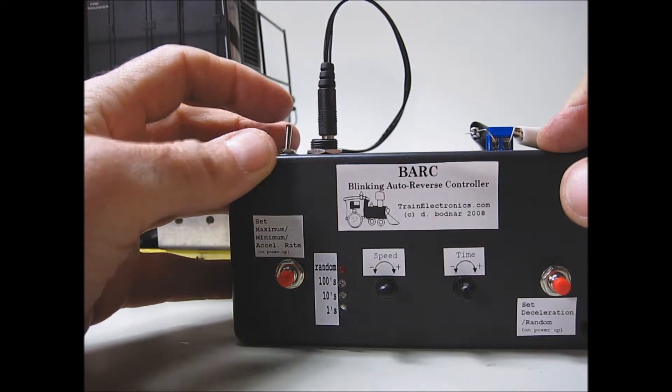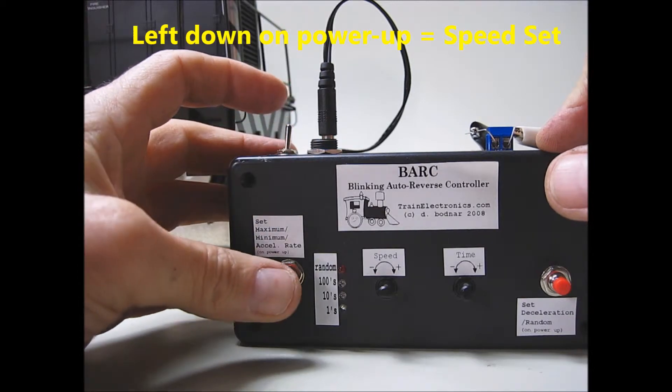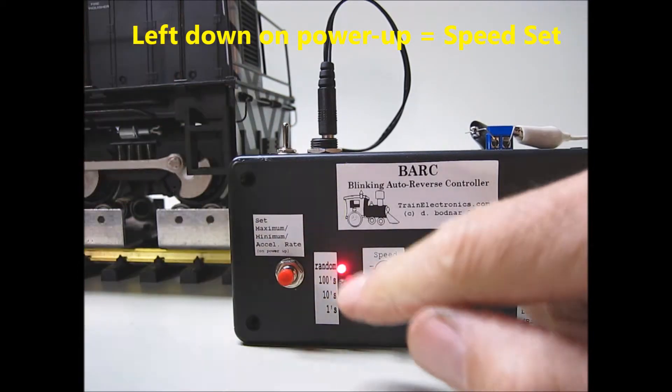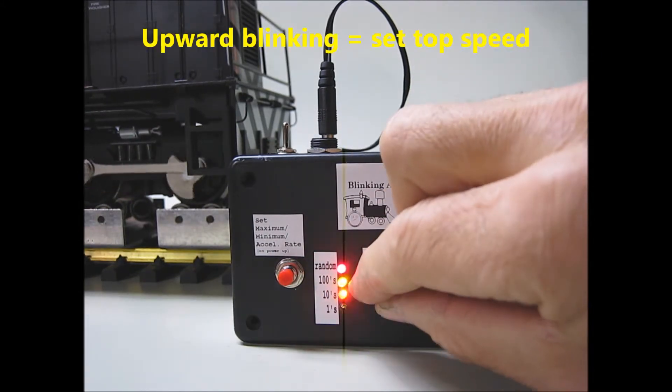Turn the power off again. I'd like to set the speed, the maximum and minimum. So I'll hold the set max minimum button down, turn the power on, and you'll notice that the lights blink in kind of an upward direction.